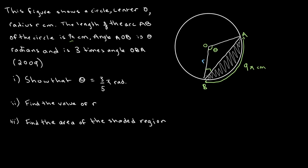The figure shows a circle center O, radius r centimeters. The length of the arc AB is 9 pi centimeters. Angle AOB is theta radians and it is three times the angle OBA. This is from a 2009 past paper question. We have to first show that theta is equal to 3 over 5 pi radians, then find the value of r, then find the area of the shaded region.